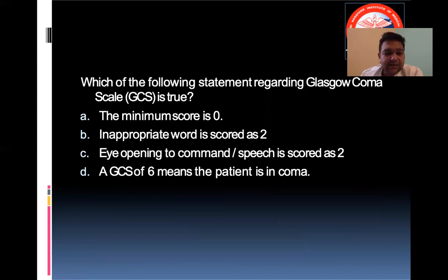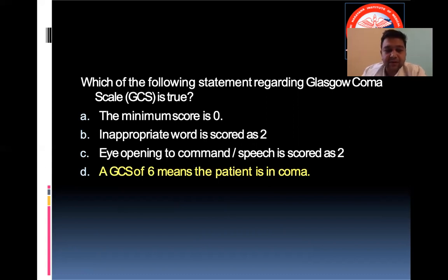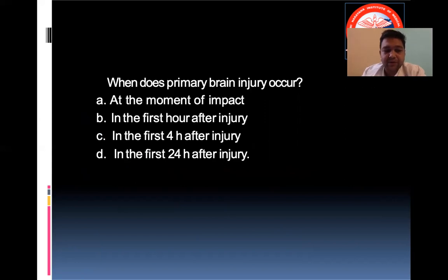A quick test: which statement regarding the Glasgow Coma Scale is true? A — the minimum score is zero; B — inappropriate words are scored as two; C — eye opening to command/speech is scored as two; D — a GCS of six means the patient is in coma. The answer is D. A GCS of six is a comatose patient; we defined GCS of eight or less as a comatose patient.